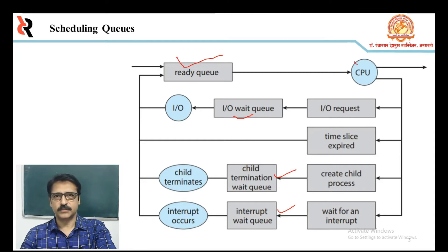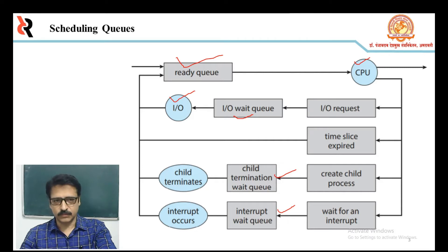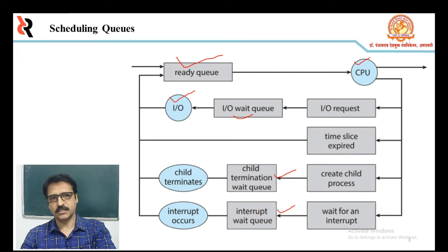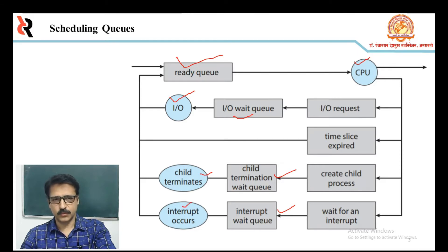The processor is a resource, and IO is also a resource. Some child process operations also go through resources. The two circles, CPU and IO, are considered resources, while the arrows represent the flow of processes through the system.